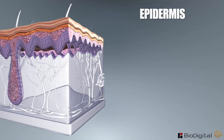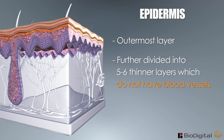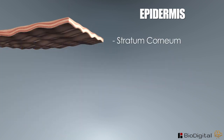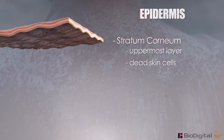The epidermis is the outermost layer of skin. This layer is further divided into five to six thinner layers which do not have blood vessels. Only two of these layers will be described. The first is the stratum corneum — the uppermost layer of the skin, which constantly sheds, where dead skin cells are sloughed off. Essentially, the top layer of the skin is composed of dead cells.